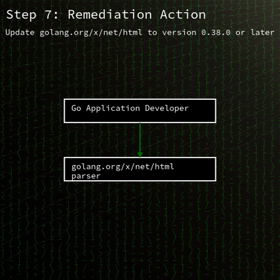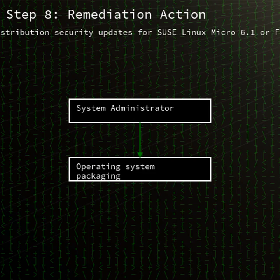To remediate CVE-2025-22872, upgrade golang.org/x/net/html to version 0.38.0 or later. SUSE Linux Micro 6.1 users should apply the BSEZ114180 patch. Fedora 41 administrators can install the updated Glow 2.1.1 package. Although this isn't a zero-day exploit in the wild, it's important for all developers and operators using Go's HTML parser to update promptly and verify that their XML or foreign content workflows remain reliable and secure.